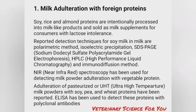Milk adulteration with foreign proteins — soy, rice, and almond proteins are intentionally processed into milk-like products and sold as milk supplements for consumers with lactose intolerance. Reported detection techniques for soy protein in milk include polarimetric method, colorimetric method, SDS-PAGE (sodium dodecyl sulfate polyacrylamide gel electrophoresis), HPLC (high-performance liquid chromatography), and immunodiffusion. Near-infrared spectroscopy has been used for detecting milk powder adulteration with vegetable protein. Adulteration of pasteurized or UHT milk powders with soy, pea, and wheat proteins has been detected using ELISA with polyclonal antibodies.